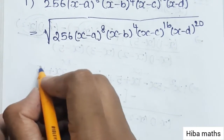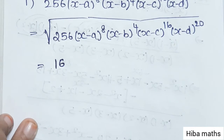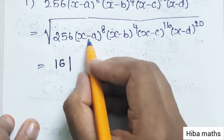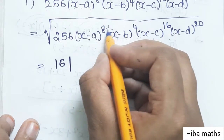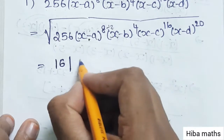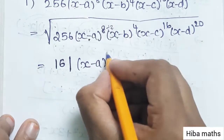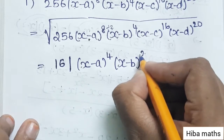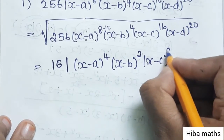For the square root of numbers, we know 256: 16 times 16 is 256, so the square root of 256 is 16. For the variables, we take the power divided by 2.